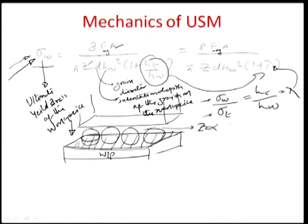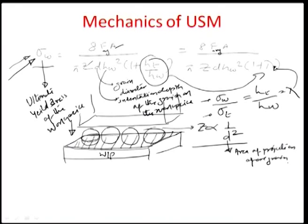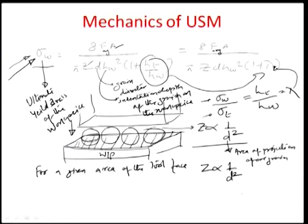If we assume the number of grains Z acting in one impact is inversely proportional to the square of the grain diameter — which also signifies the area of projection of one grain — it is not improper to assume this kind of relationship. For a given area of the tool face, Z is actually inversely proportional to the square of the grain diameter.